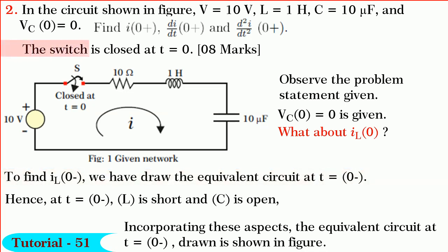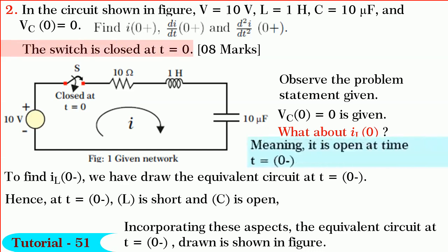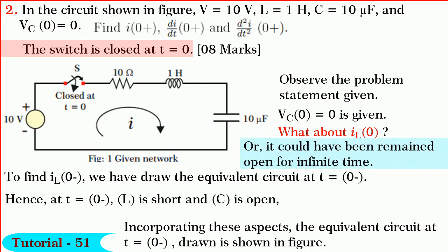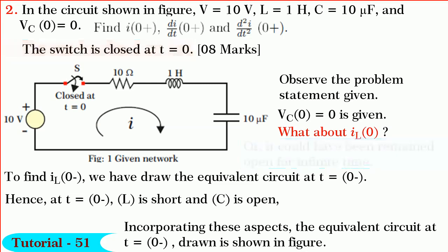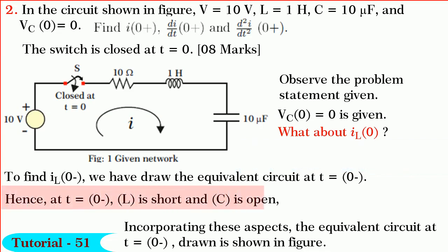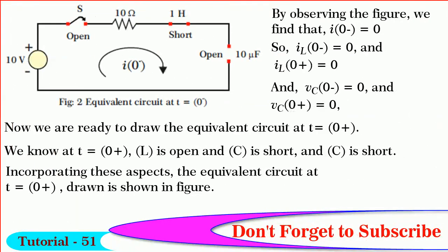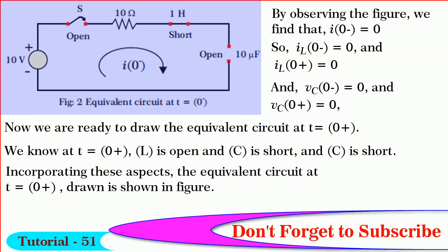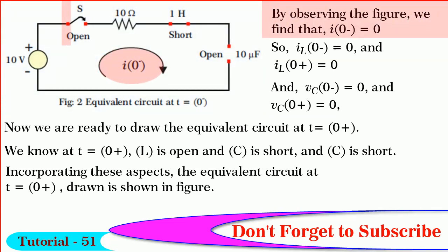It is given that the switch is closed at t equals 0, meaning it is open at t equals 0 minus and it could have been in open position for a long time or for an infinite time. So at t equals 0 minus, circuit elements behave as though t equals infinity. Hence at t equals 0 minus, L is short and C is open. The equivalent circuit at t equals 0 minus is shown in figure. I(0-) equals 0 as switch S is open, so iL(0-) equals 0 and iL(0+) also equals 0.